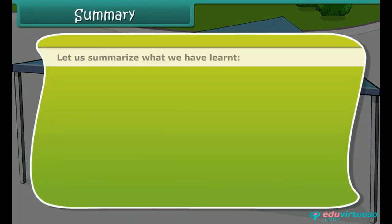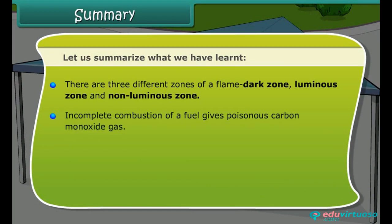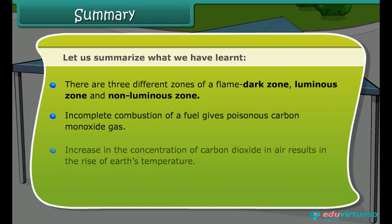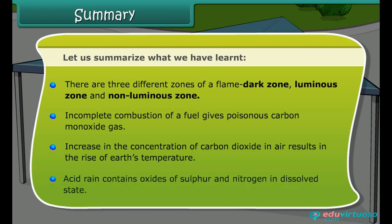Let us summarize what we have learned. There are three different zones of a flame: dark zone, luminous zone, and non-luminous zone. Incomplete combustion of a fuel gives poisonous carbon monoxide gas. Increase in the concentration of carbon dioxide in air results in the rise of Earth's temperature. Acid rain contains oxides of sulfur and nitrogen in dissolved state.